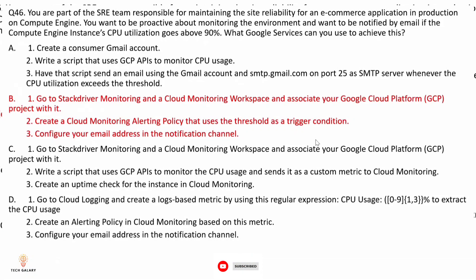Option C: use Stackdriver Monitoring and a Cloud Monitoring workspace, write a script that uses GCP APIs to monitor CPU usage and send it as a custom metric to Cloud Monitoring, and create an uptime check for the instance. This is not correct because by default Stackdriver supports alerting by email without requiring you to write any script. There is also no mention of creating an alerting policy or email notifications.